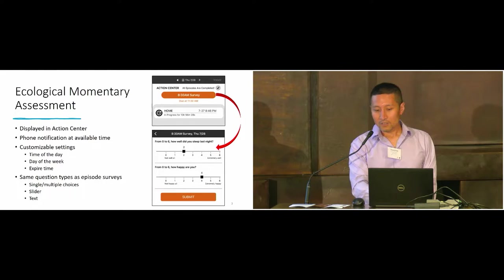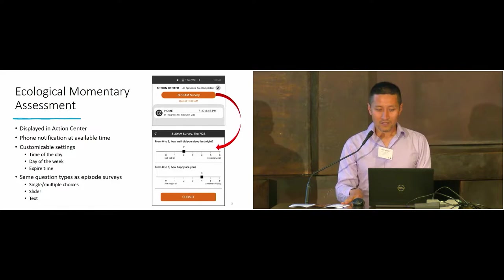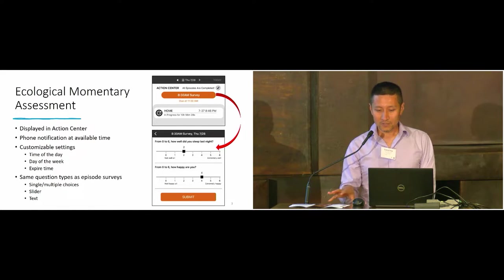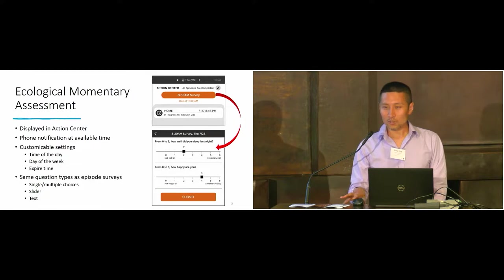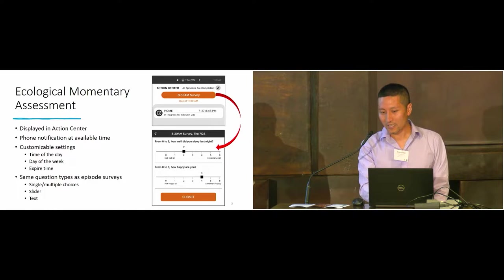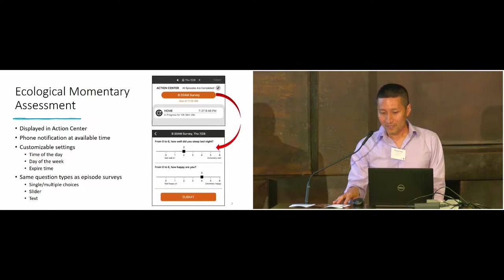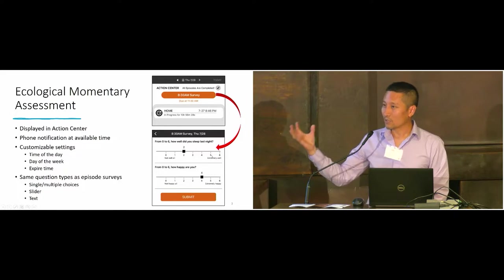The survey itself is the same as the existing episode surveys. A few question types you can ask: single or multiple choice, a slider, or text input. In this example, the user clicks the 8:30 survey button, then goes directly to the survey screen where they can fill out the survey and submit.